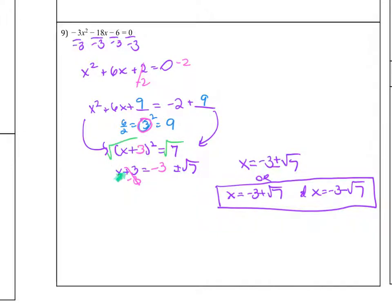Then I solve using square roots. So x plus 3 equals plus or minus square root of 7. Then I subtracted 3 on both sides. So the final answer is x equals negative 3 plus or minus square root of 7.